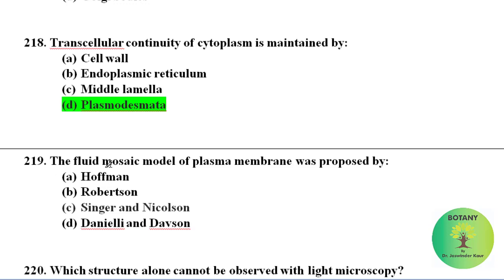The fluid mosaic model of plasma membrane was proposed by Singer and Nicholson in the year 1972.